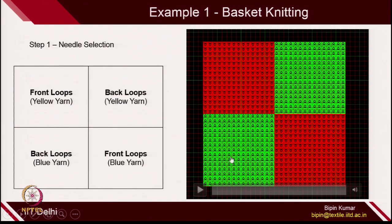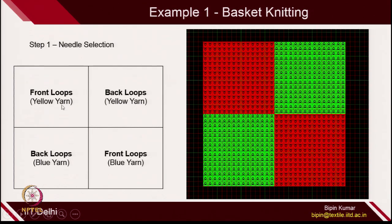This is how you create back loops and front loops. Each green box represents one back loop and each red box represents one front loop. Naturally, if you want to create back loops, back bed needles will be used. And if you want to create front loops, the front bed needles will be used. This is how you create the pattern depending on your imagination.